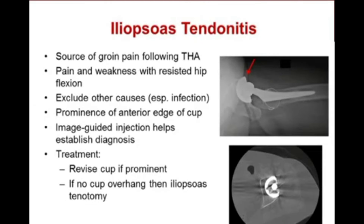Iliopsoas tendonitis is a cause of groin pain after total hip arthroplasty, typically presenting with groin pain on resisted hip flexion. Other causes including infection should be excluded. Radiographic imaging may show prominence of the anterior edge of the cup. An image-guided injection into the iliopsoas tendon sheath can help establish the diagnosis. For recurrent or problematic iliopsoas tendonitis, treatment involves revising the cup if prominent, or iliopsoas tenotomy if there is no anterior cup overhang.